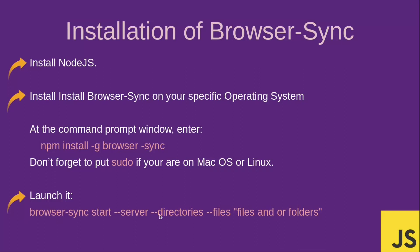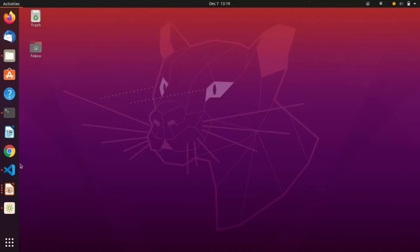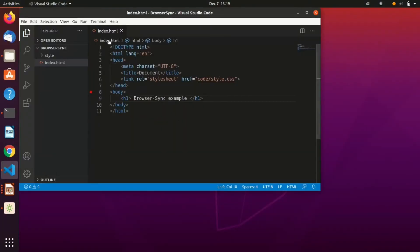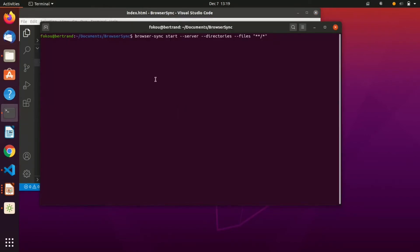Within the Browser Sync command, inside double quotes you are going to put all the files that you want Browser Sync to watch. As you save them, it will reload the web page. You can also put a folder path there. Let's go ahead and see an example with the index.html file.